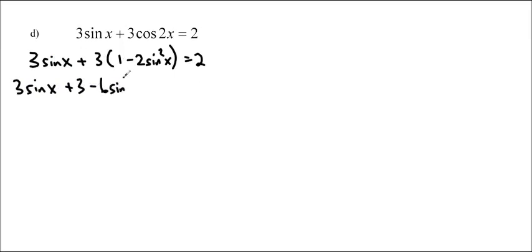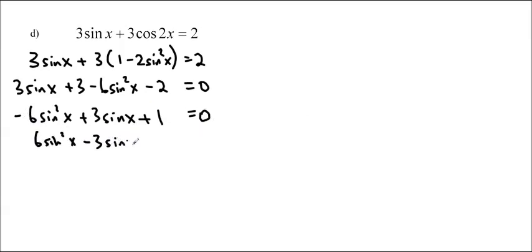So we'll expand that. -6sin²x - 2 is equal to 0. And then I'll put it into standard form. +3sin x + 1 is equal to 0. If you don't like to have a negative in front, because it's equal to 0, we'll just multiply everything by negative 1, and that's okay. We're not proving something. We're just solving. So you don't have to worry about doing that. You're allowed.